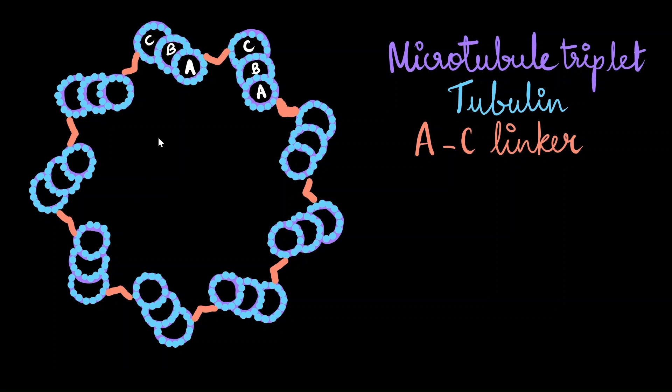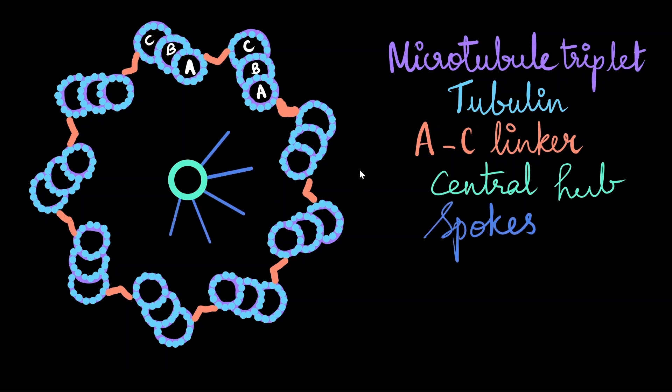Instead, the center is hollow, but it is also proteinaceous and is called the central hub. The central hub is connected to the microtubules by means of radial spokes, which are made of proteins as well.